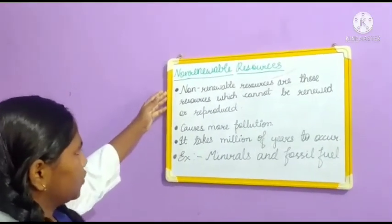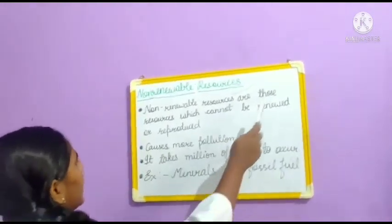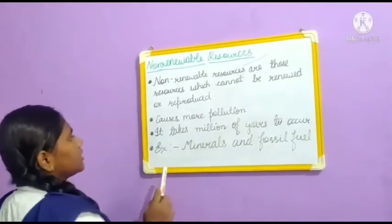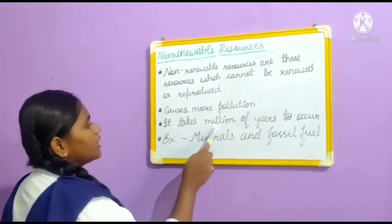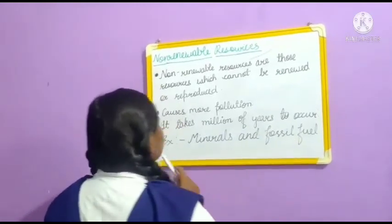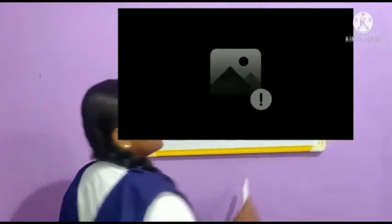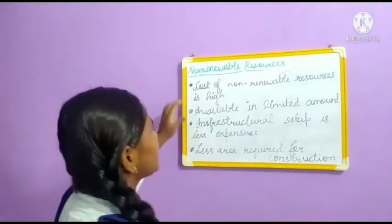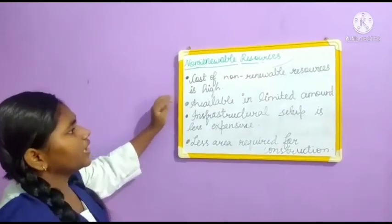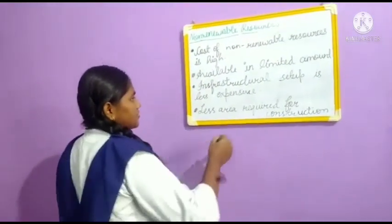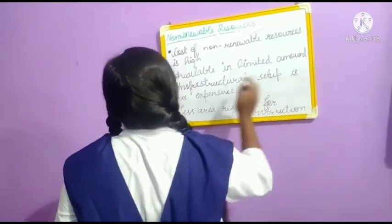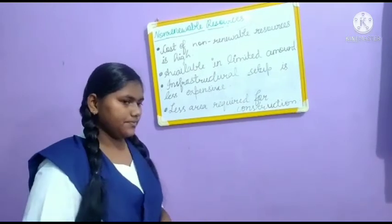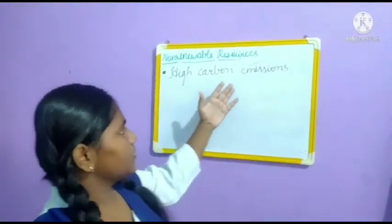Second, non-renewable resources. Non-renewable resources are those resources which cannot be renewed or reproduced. They cause more pollution. It takes millions of years to obtain them. For example, fossil fuels. The cost of non-renewable resources is high and they are available in limited amounts. Infrastructure setup is less expensive. Less area is required for construction. They have high carbon emissions.